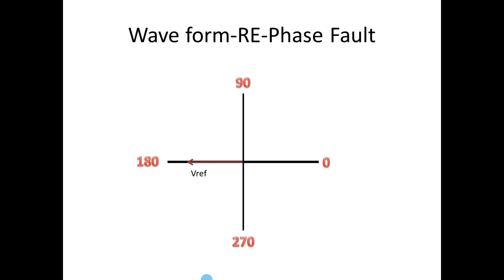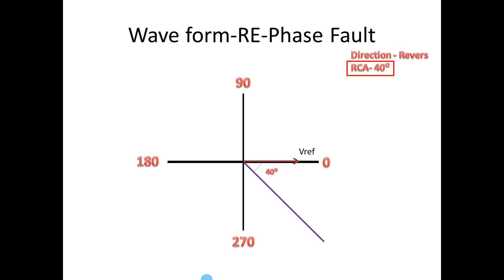Now we are going to see the reverse directional earth fault operating region. For reverse directional, V reference should be opposite to the forward V reference, and here also RCA is 40 degrees. We take V reference as reference, make 40 degrees towards the clockwise direction and draw a line — this line is known as MTL. To get this angle, subtract 40 from 360 degrees; we get 320 degrees — draw a line here.